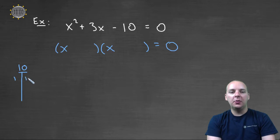So what multiplies to ten? Well one and ten, and two and five, and that's about it. Alright, so which of these could possibly add up to three?